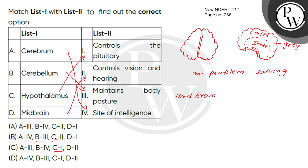So the final answer matches are: Cerebrum — IV (site of intelligence), Cerebellum — III (maintains body posture), Hypothalamus — I (controls pituitary), Midbrain — II (controls vision and hearing). The correct option is the third or fourth match.